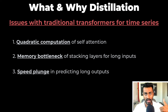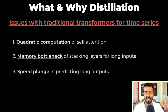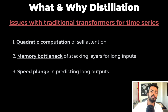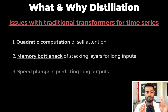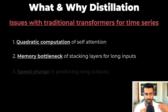The first issue is the quadratic computation of self-attention. The second is the memory bottleneck in stacking layers for long inputs. And the third is the speed plunge in predicting long outputs. In this video, we want to focus on the concept of distillation in the encoder, so the first two challenges are what's relevant here, and we will talk about each while introducing distillation itself.